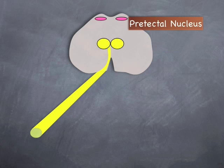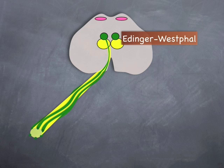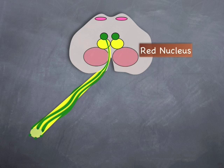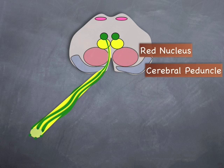Pretectal nuclei lie dorsally and receive innervation from the optic tract as part of the pupil light reflex. These then pass fibers bilaterally to the Edinger-Westphal nucleus, which is the parasympathetic nucleus responsible for pupil constriction and closely related to the oculomotor nucleus. Fibers from both pass ventrally through the red nucleus and cerebral peduncles and exit as the fascicular subarachnoid oculomotor nerve.